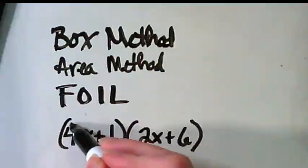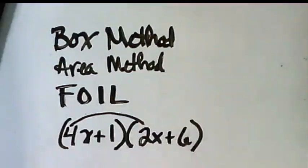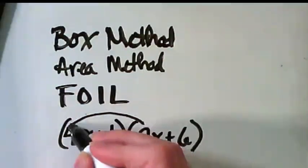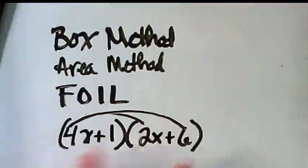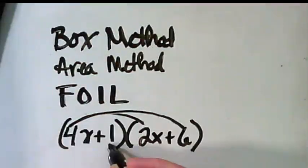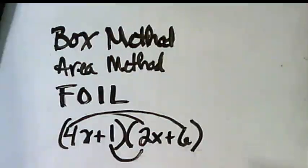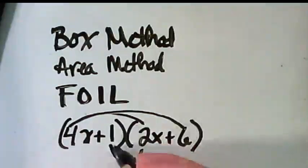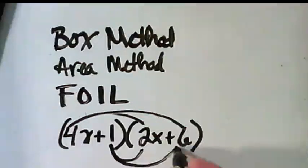What happens is we distribute this to this. That's the first. These are the first two, right? First to first. And then outer to outer. Inner to inner. And last.